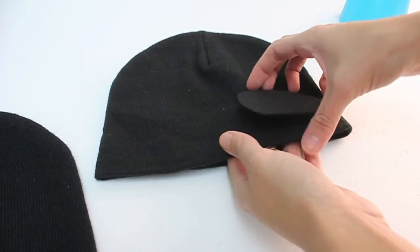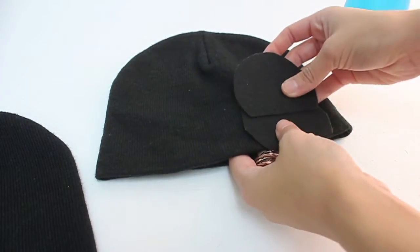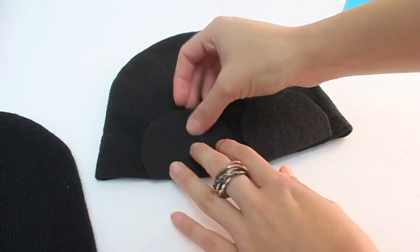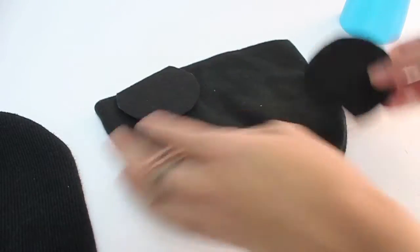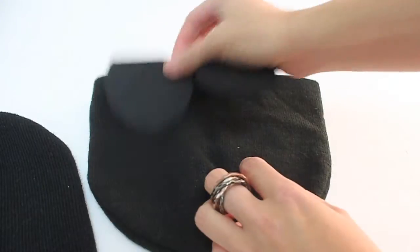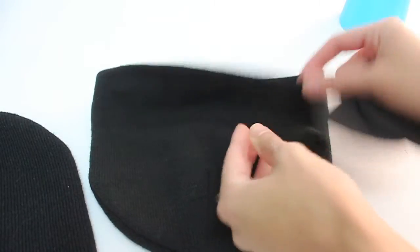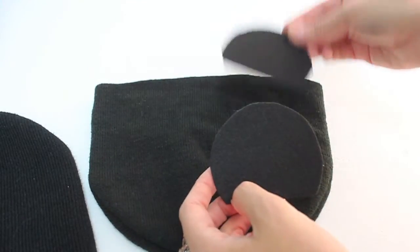Now you're going to take a second beanie. I just happen to have this beanie hanging around. It's actually really old. So what you're going to be doing is using the extra material or fabric from that one to sew around your felt.